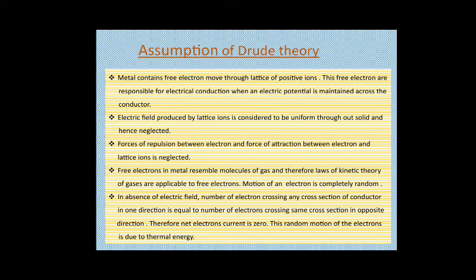Drude made several assumptions on which he improved classical theory. First, metals contain free electrons that move through a lattice of positive ions, and these free electrons are responsible for electrical conduction. Second, when an electric potential is maintained across the conductor, an electric field is produced which is considered uniform throughout the solid. Third, repulsive and attractive forces between electrons and lattice ions are considered. Fourth, the laws of kinetic theory of gases are applicable to the free electrons.